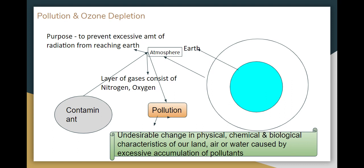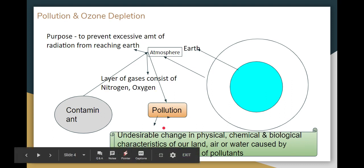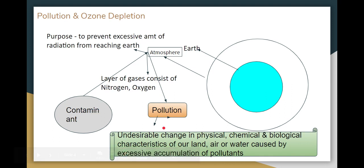When contaminants are added to the atmosphere, it causes a lot of pollution. The definition of pollution is: the undesirable change in the physical, chemical, and biological characteristics of our land, air, and water, caused by the excessive accumulation of pollutants. Land, water, and air are all necessary, and any pollutants added can change their physical, chemical, and biological characteristics.